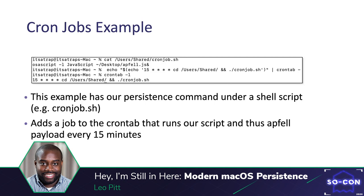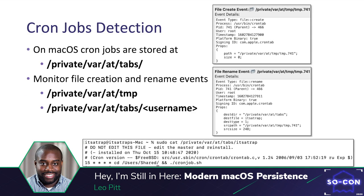You can think of the users/Shared directory as the Windows equivalent of C:\Users\Public. For detection, two events occur upon each write to the crontab: first a temporary file is created — you can see on the right 'tmp.741' — and then a rename event occurs, saving it under the username in /private/var/at/tabs. The ESF events shown are from Crescendo, which leverages ESF to easily visualize these events. The cron file itself contains a few metadata comment lines followed by the actual cron job entry.